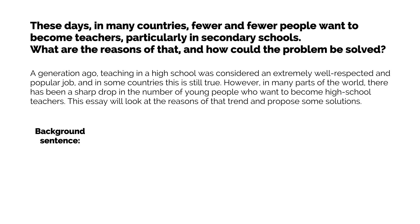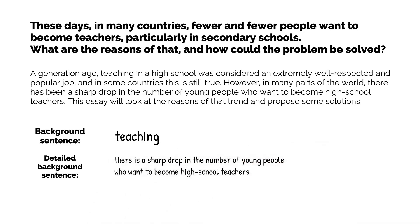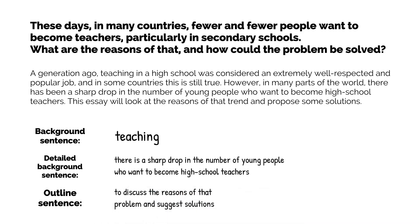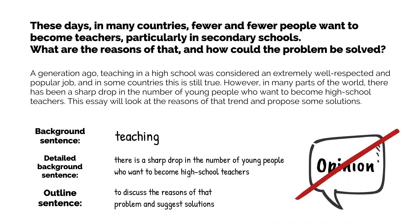As you can see, the background sentence relates to the topic which is teaching. In the detailed background sentence, the writer introduces the problem, stating that there is a sharp drop in the number of young people who want to become high school teachers. Finally, in the outline sentence, he has stated the purpose of the essay, which is to discuss the reasons for that problem and suggest solutions. Remember, in a reason and solution essay you don't have to give your opinion because the task doesn't ask you to do so.